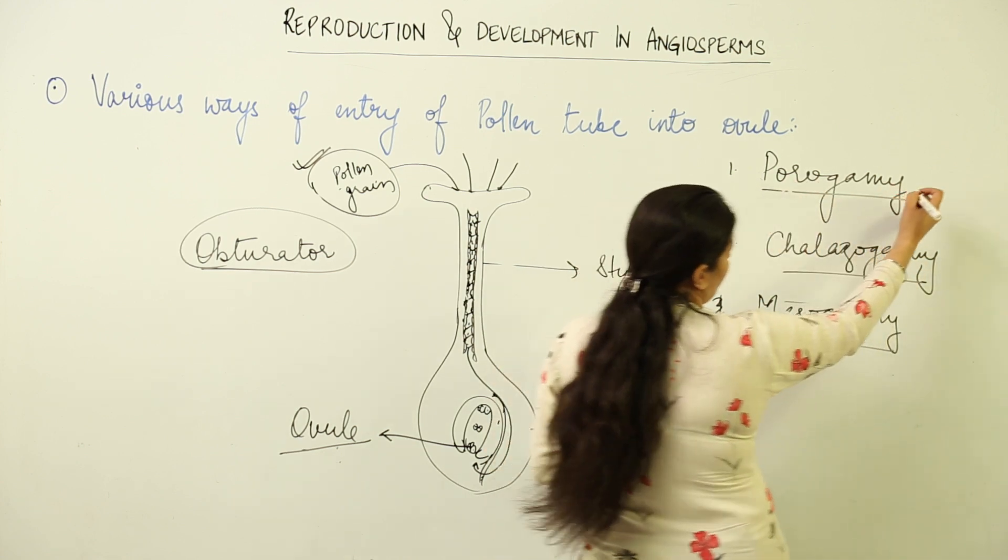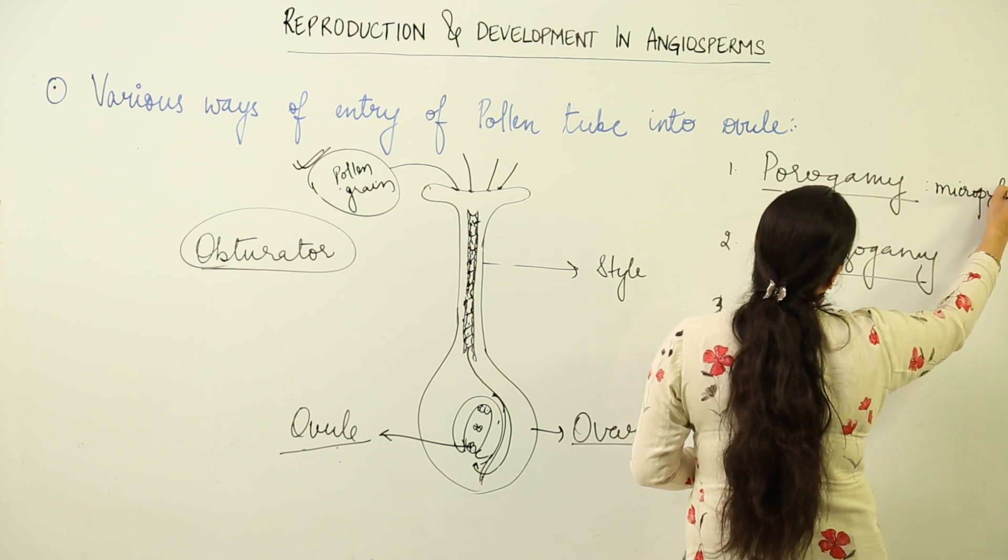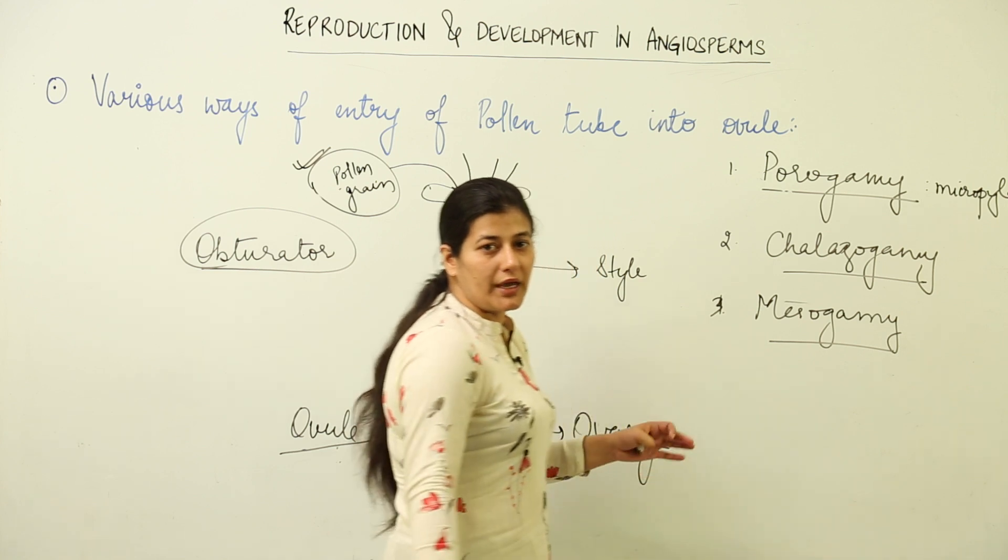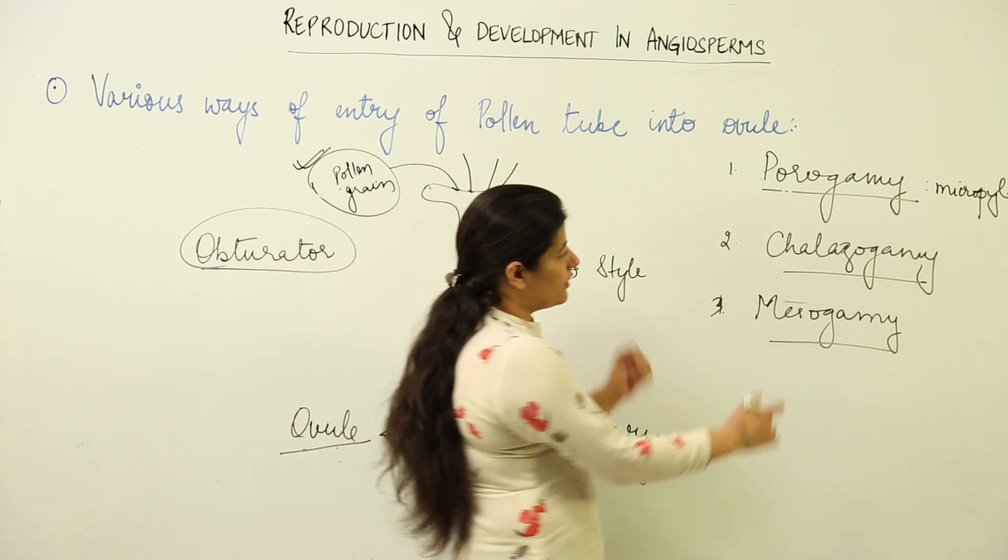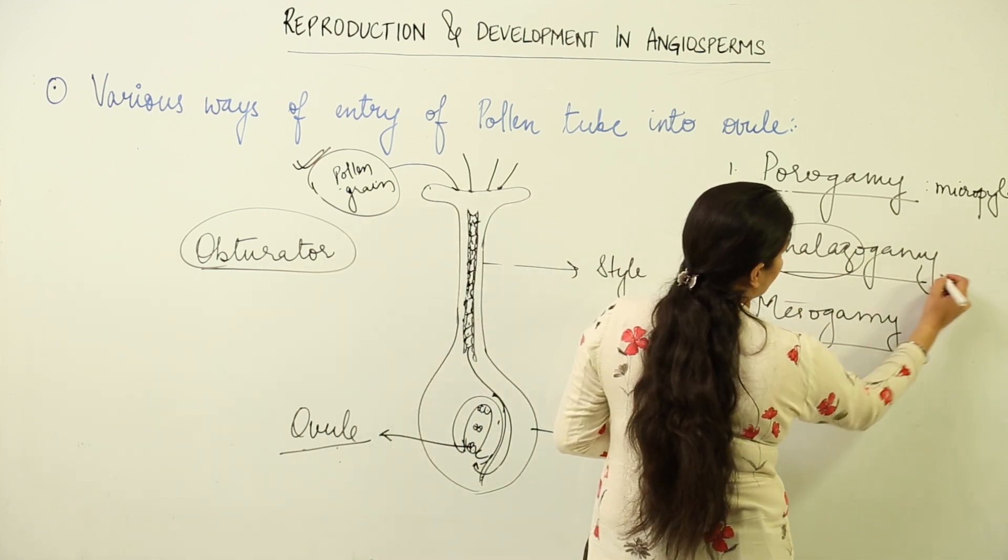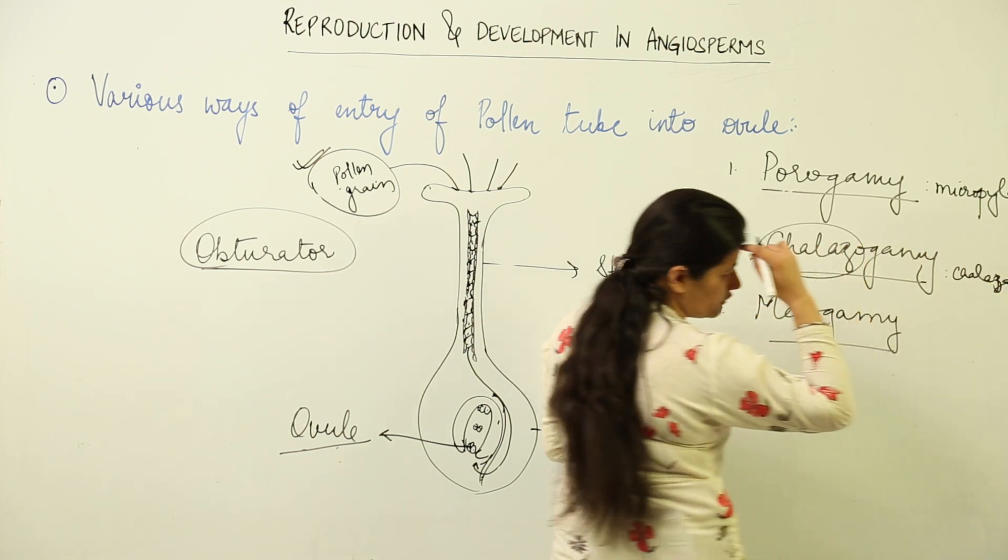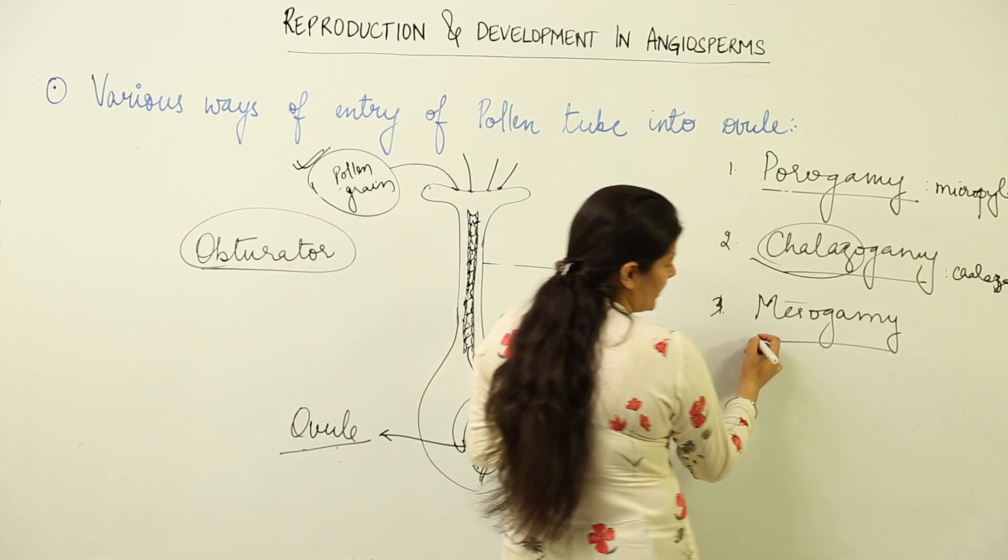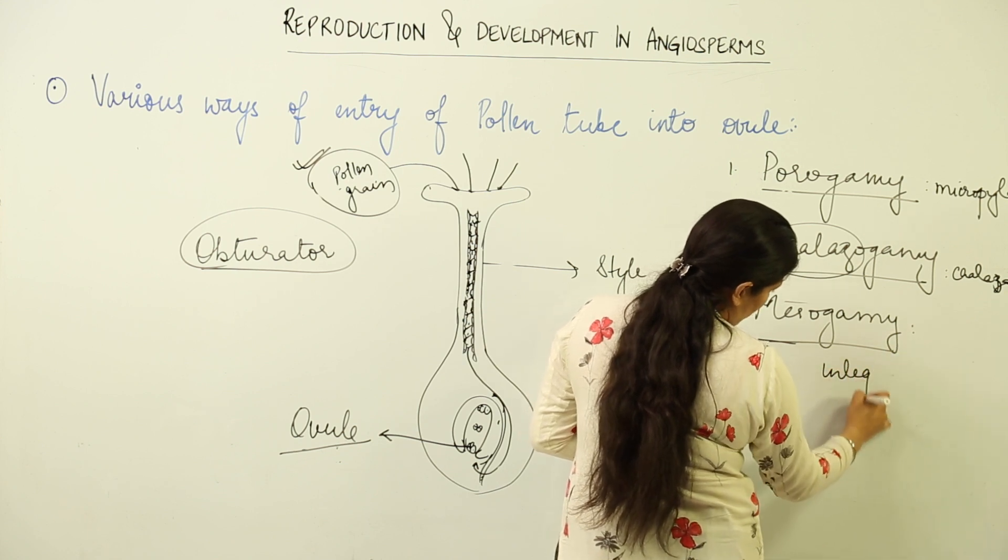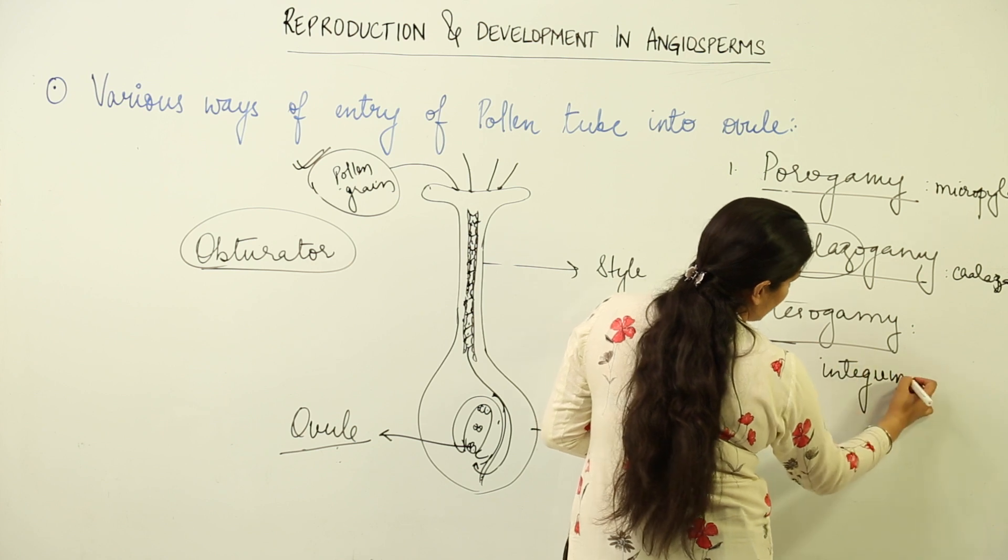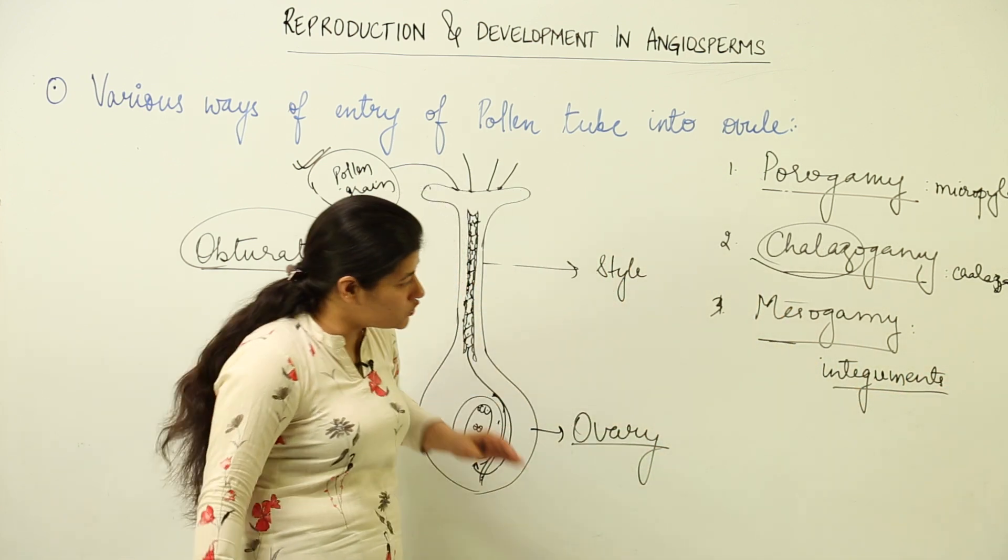Porogamy is entry through micropyle, the most common one where the pollen tube would enter through micropyle. Chalazogamy, the name is suggesting that the entry would be through chalaza or the chalazal pore which is having antipodals. The last one is misogamy. The entry would not be from chalaza or the micropyle end, it would be through integuments of the ovule, that means transverse entry of the pollen tube.